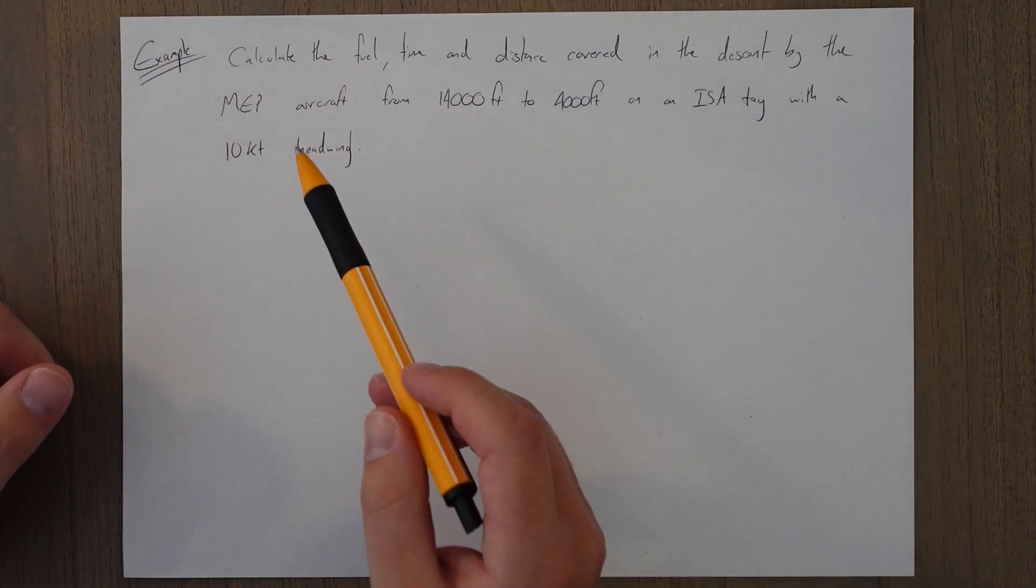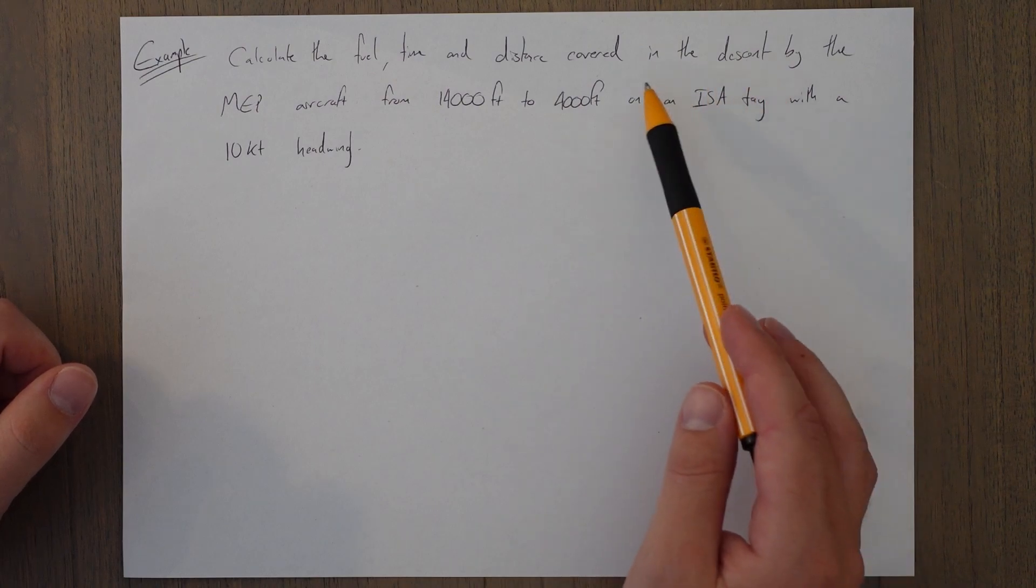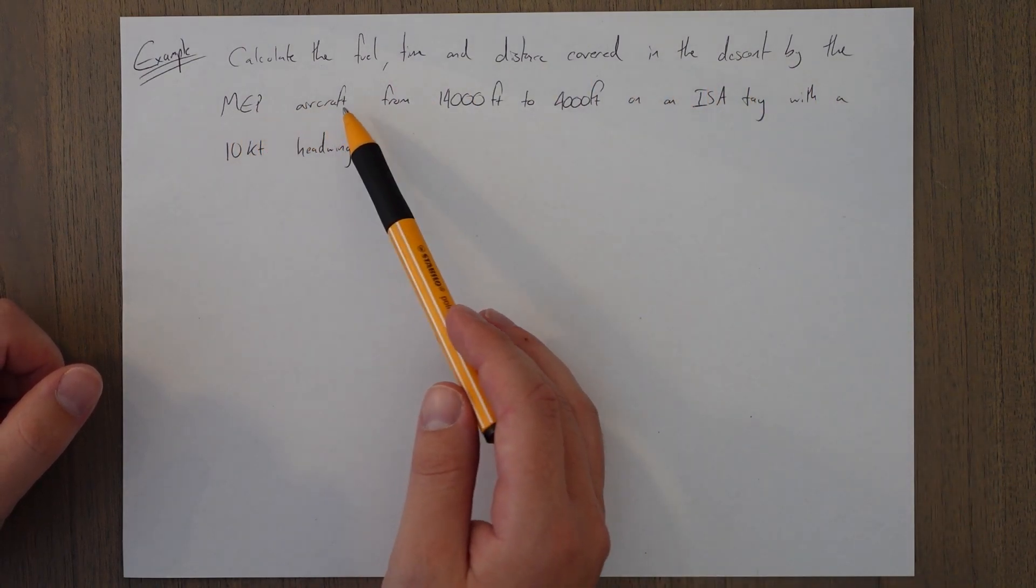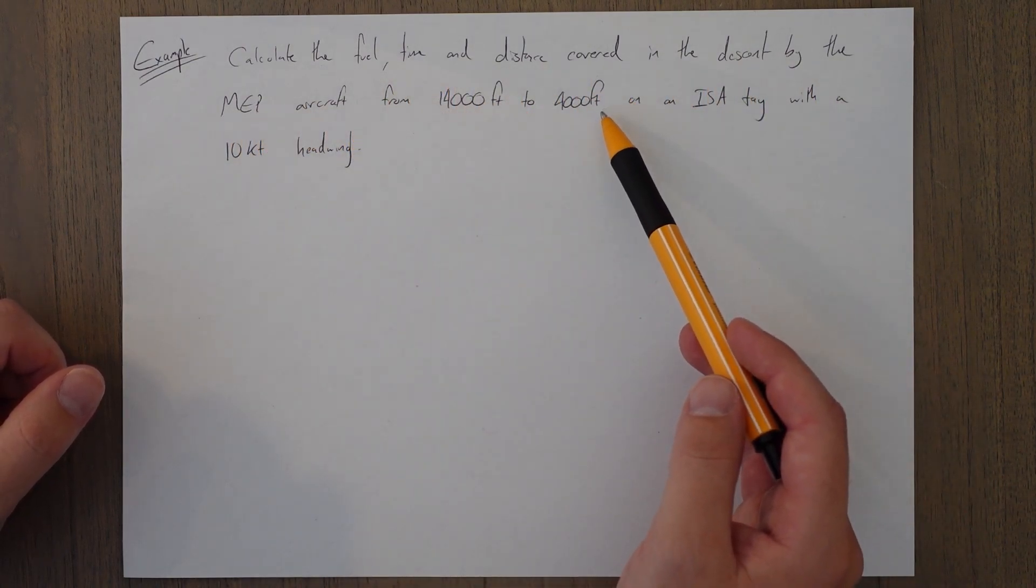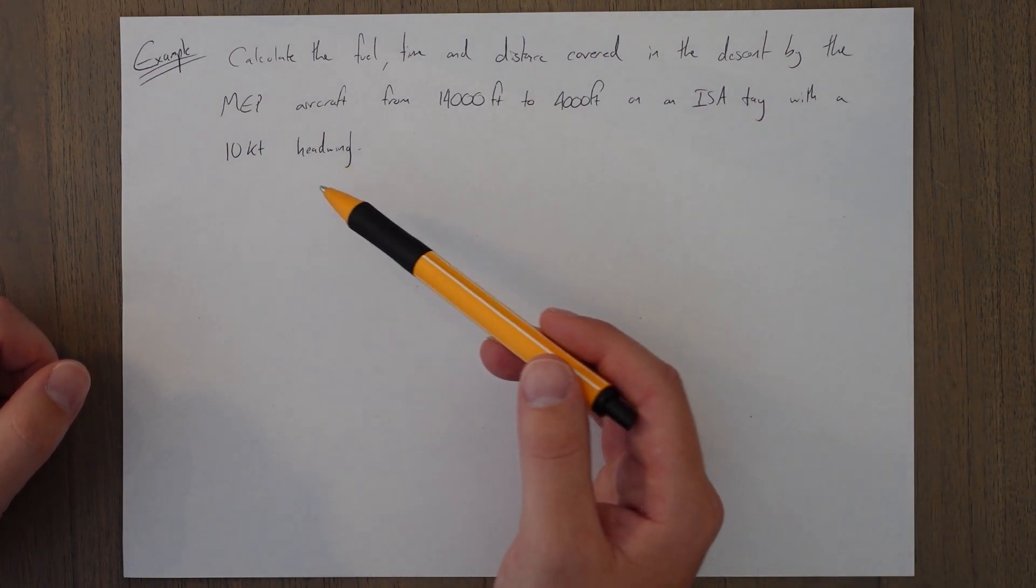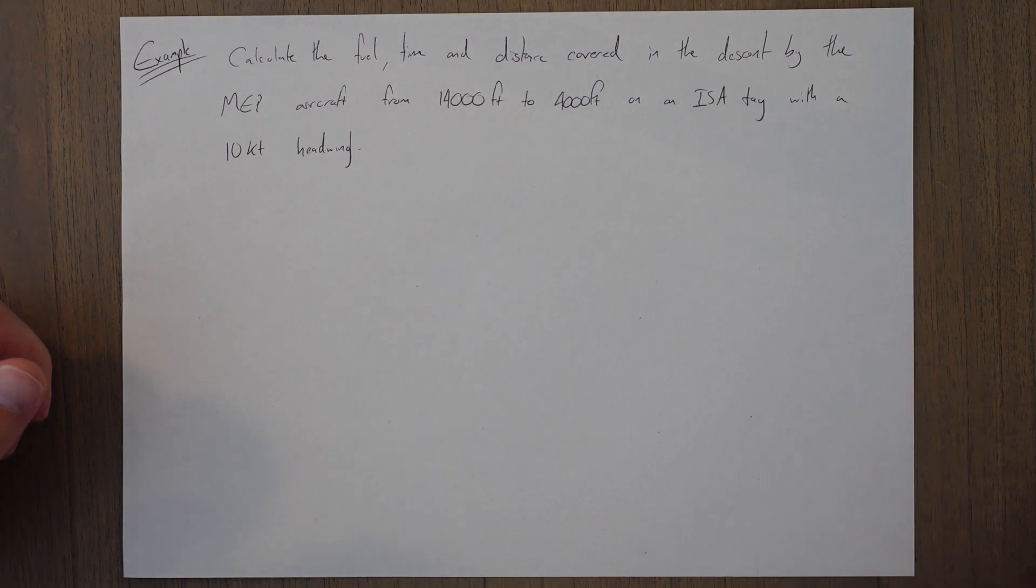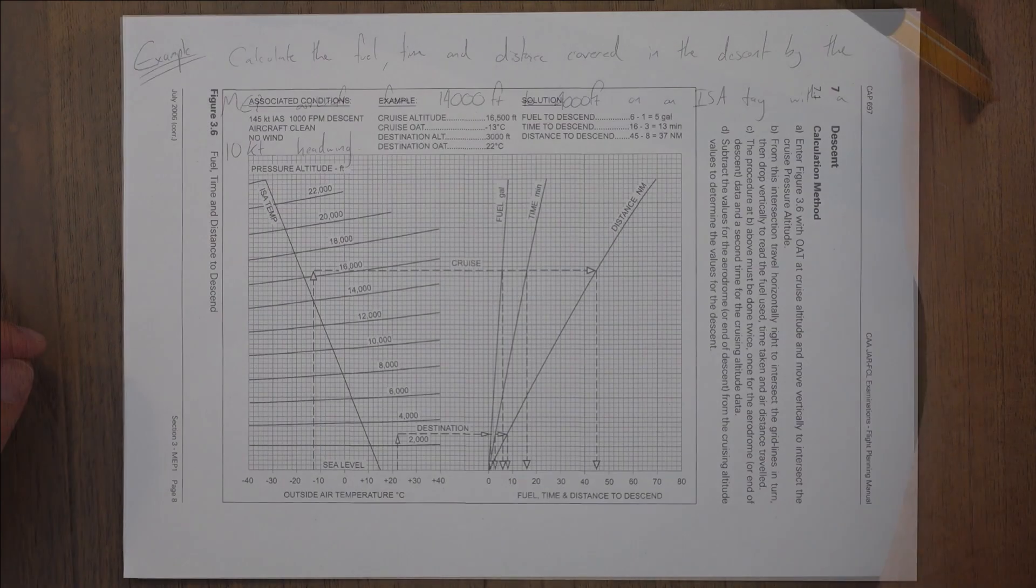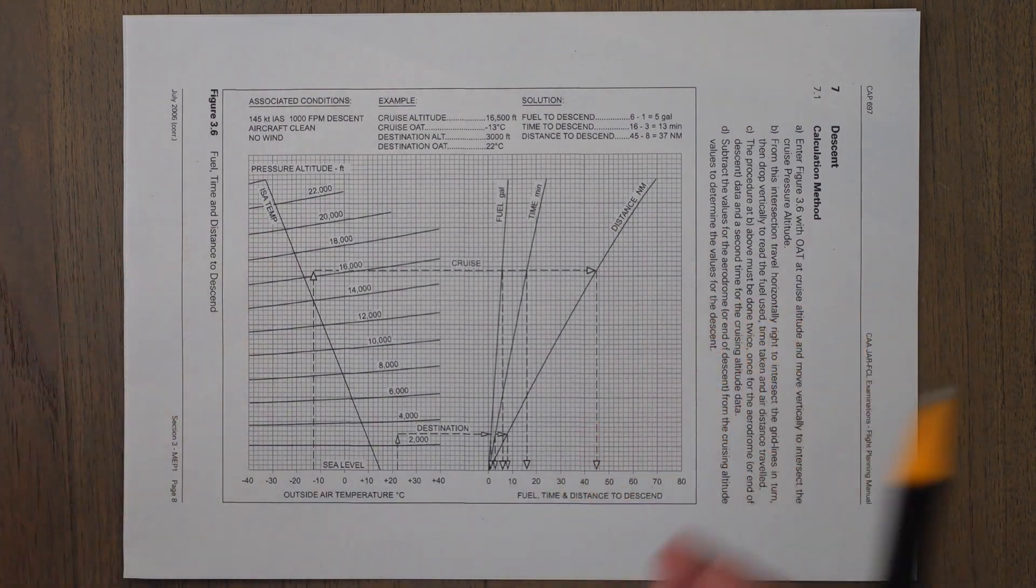We're just going to use this made-up example to show exactly how these graphs are so useful. We've got to calculate the fuel, time, and distance covered in the descent by the multi-engine piston aircraft from 14,000 feet to 4,000 feet on an International Standard Atmosphere day with a 10-knot headwind.